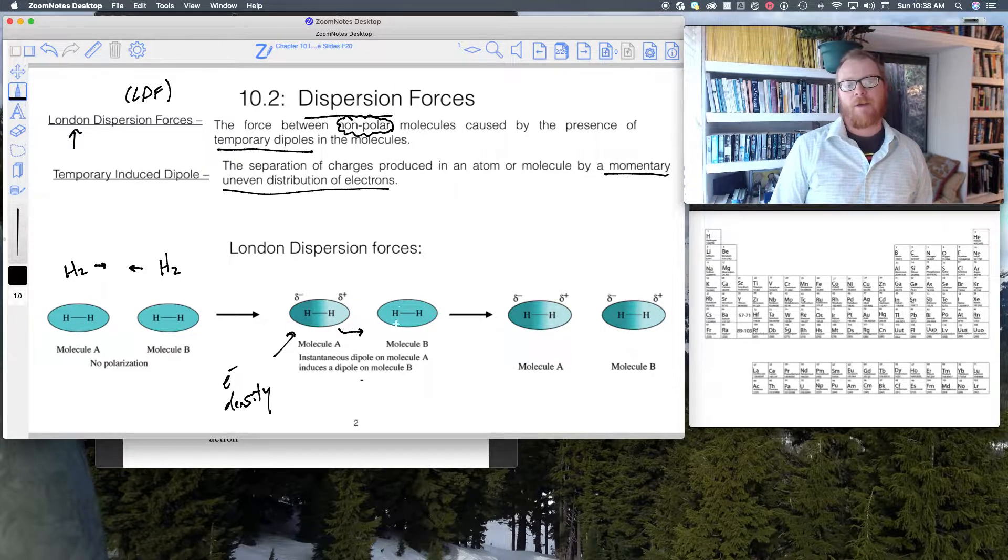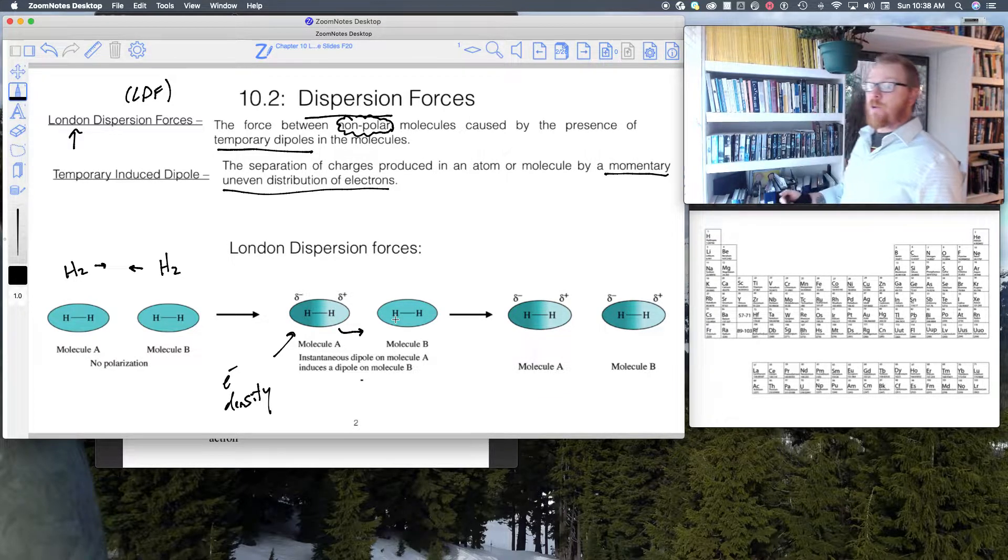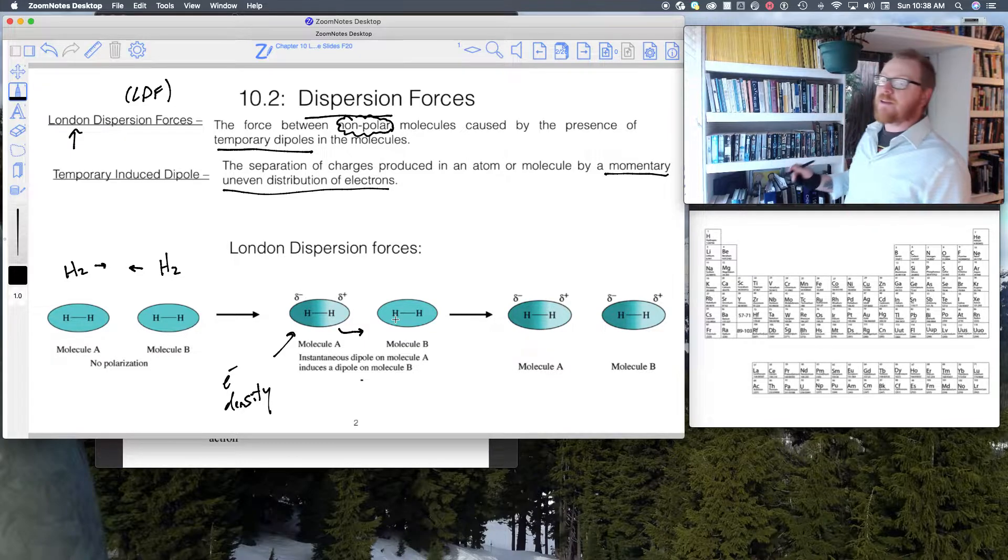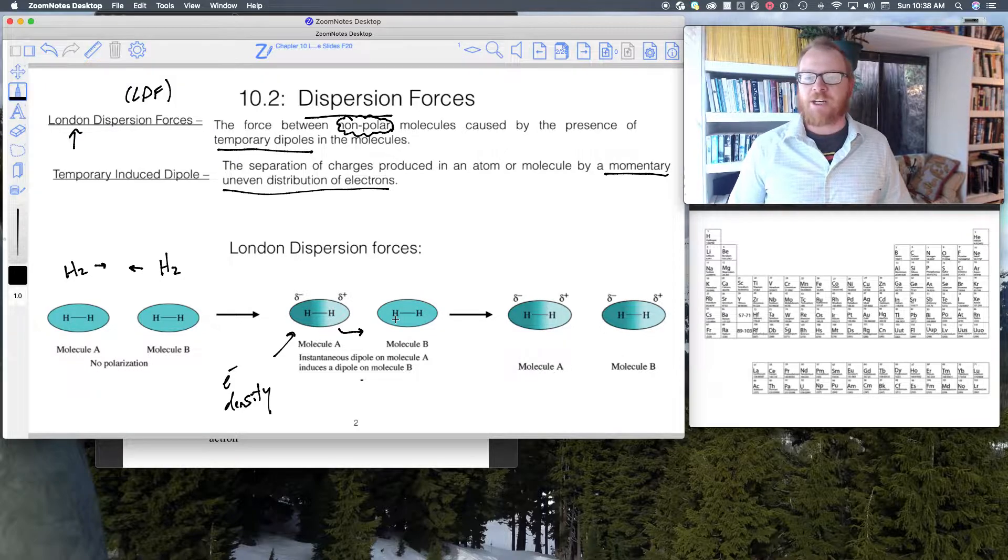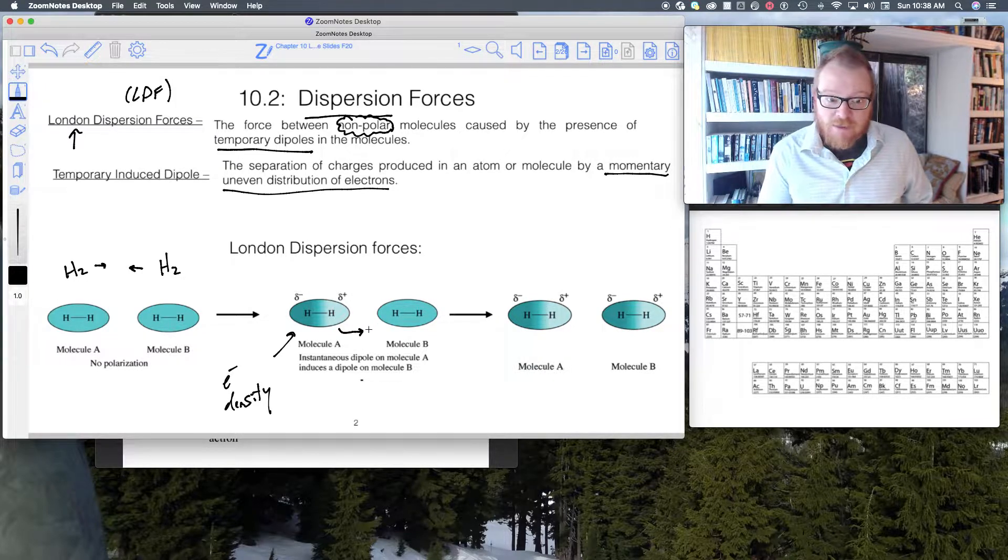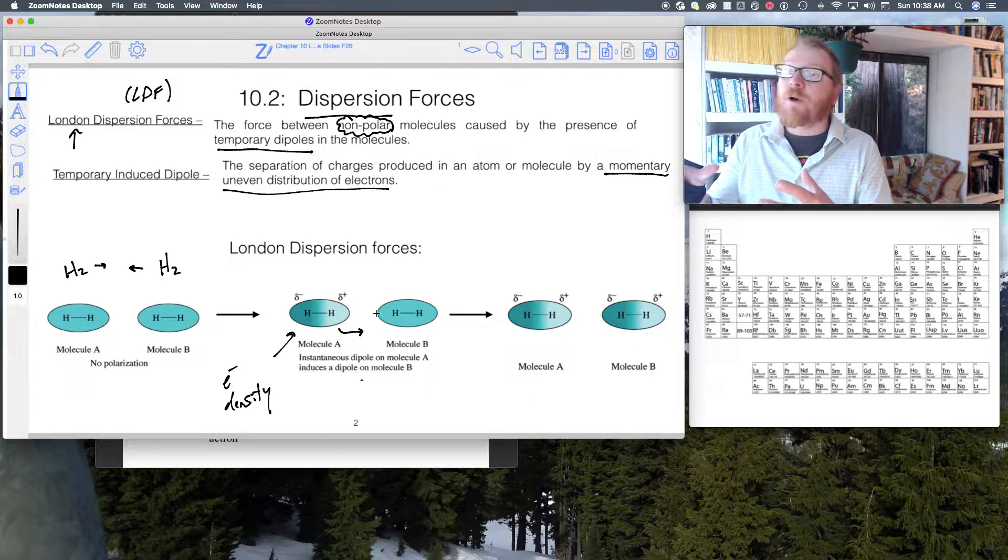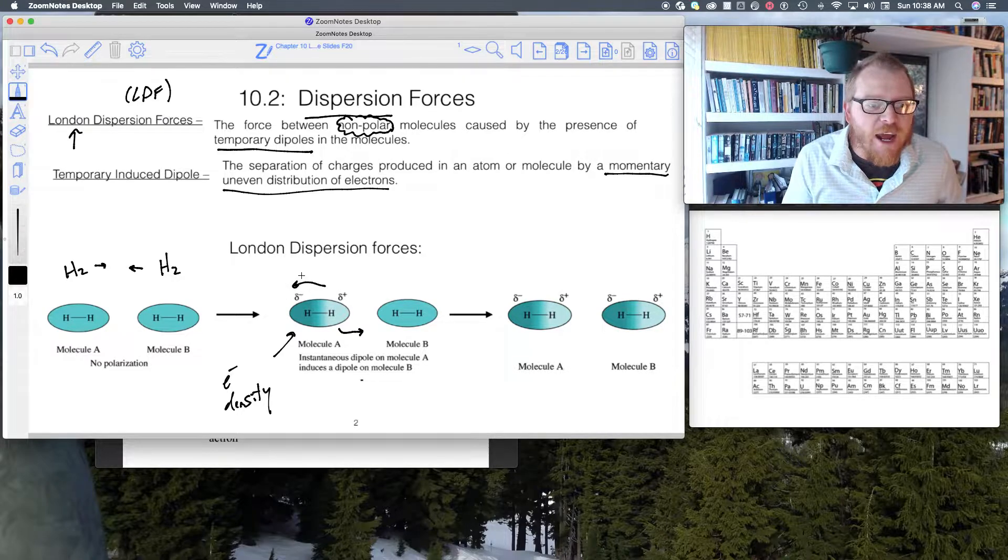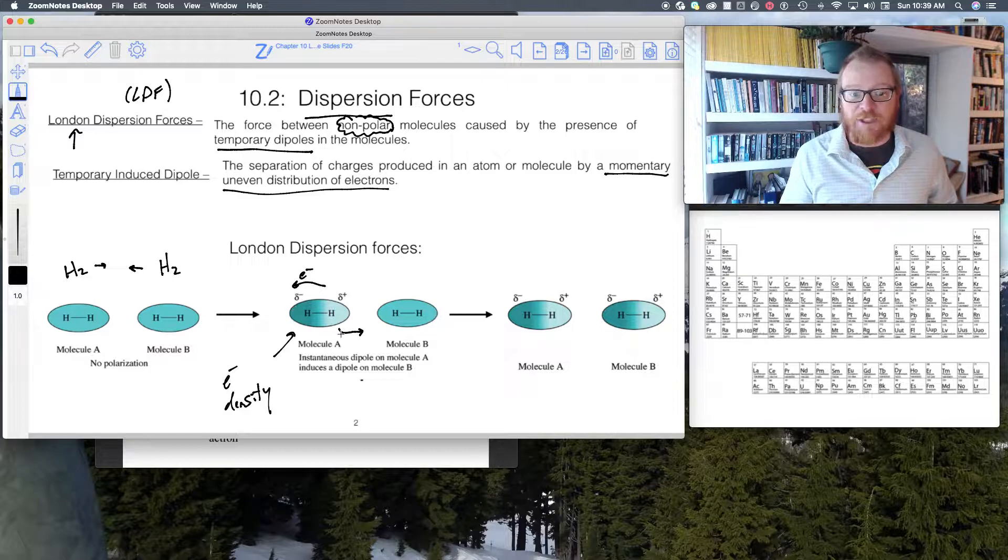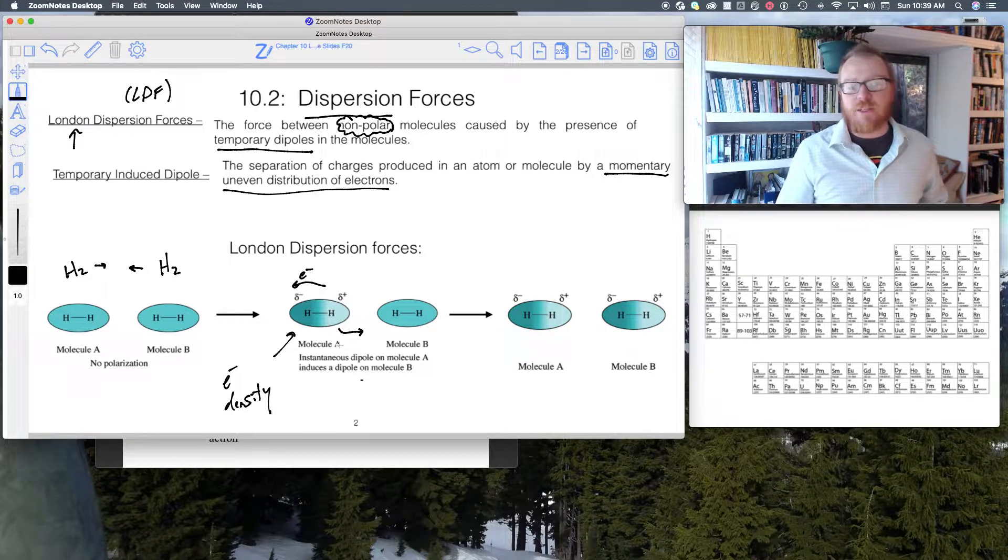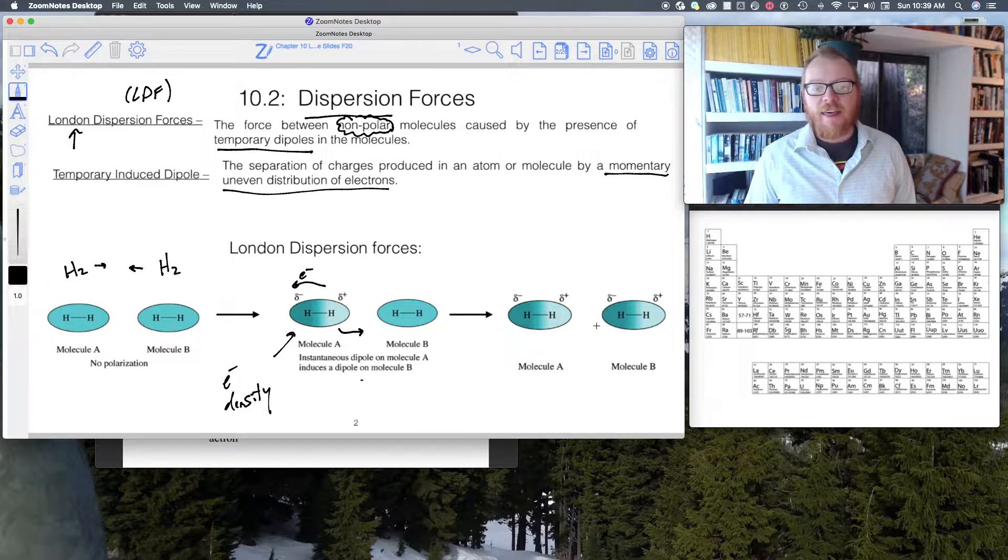Because they're repelled, all of the electron density moves. It kind of moves out of the way, much like if you're about to collide with somebody walking down the street, you might move out of the way a little bit. These electrons, they kind of feel the negative charge from the neighboring molecule, so they all move over to the other side of the molecule.